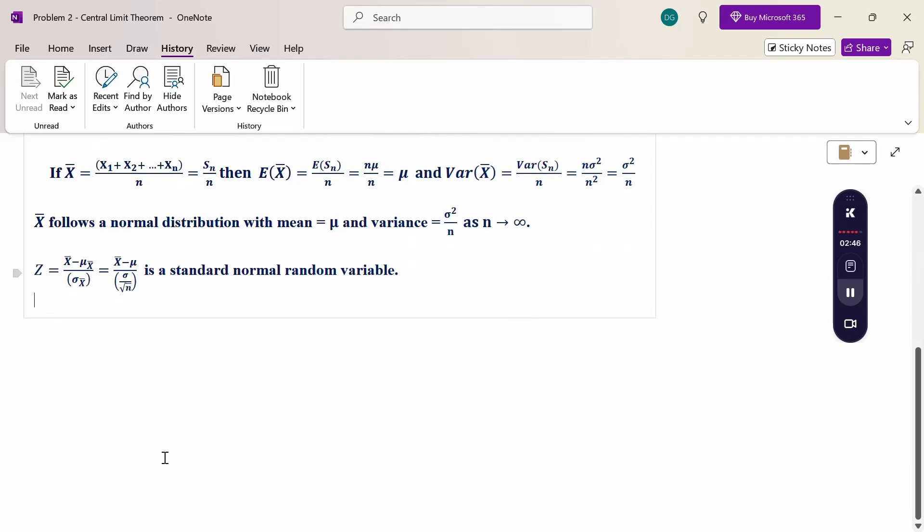Therefore, in this case, let x bar be the average lifetime of tube lights of a sample of size n equal to 60.